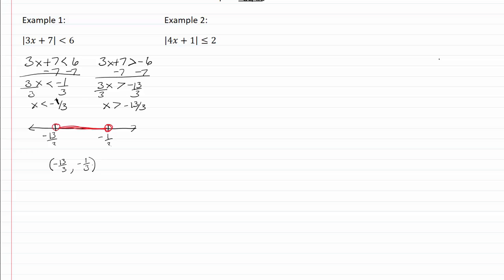Let's take a look at example two, we set up the first equation exactly as it's written, with four x plus one is less than or equal to two. Our second equation we have four x plus one will be greater than or equal to negative two.